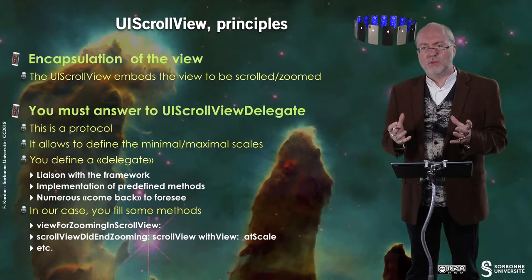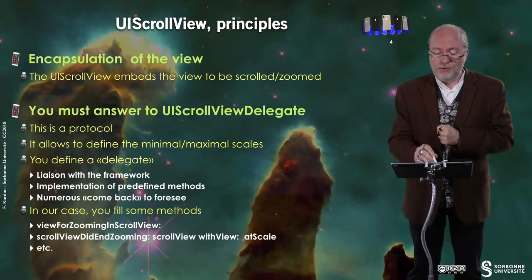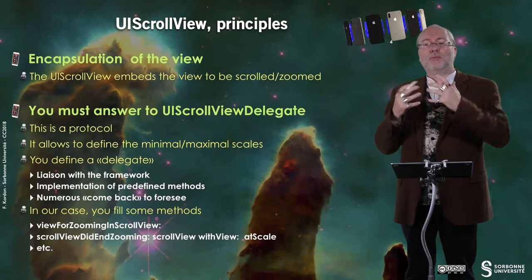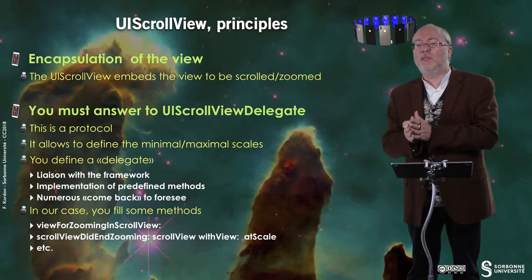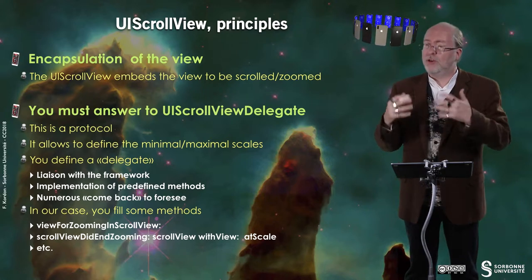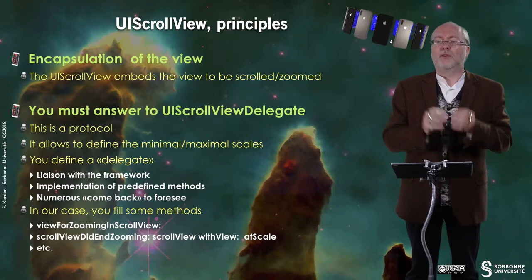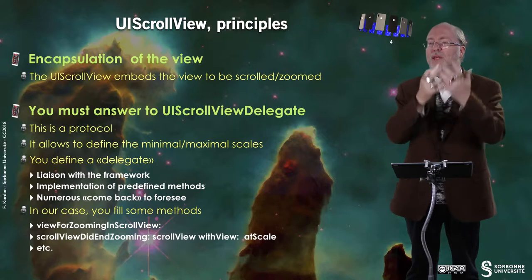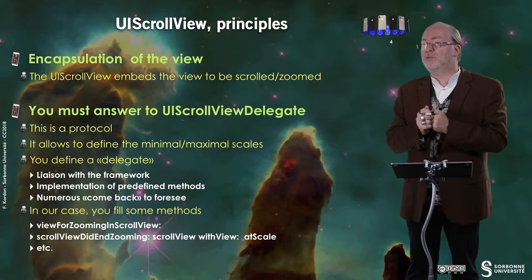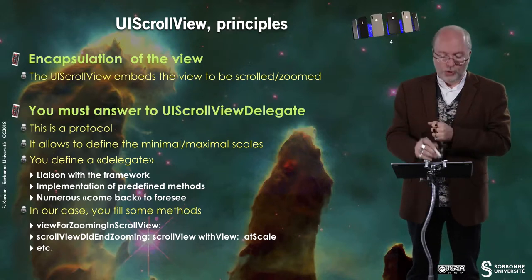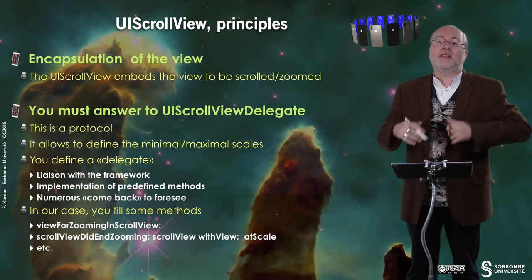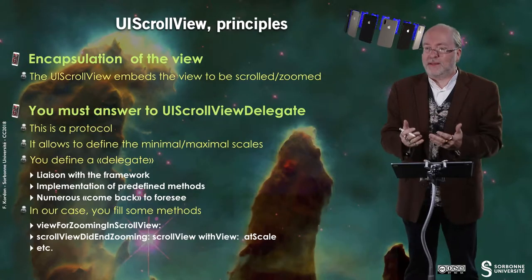So what's the principle of a UIScrollView? The UIScrollView encapsulates a view — this view is a sub-view of the UIScrollView and will be manipulated through it. To do so, you must conform to a UIScrollViewDelegate protocol. In the protocol you have methods to implement, which can be mandatory or optional depending on the protocol. You associate a delegate, which is the target that receives events related to that protocol and handles the corresponding callbacks if they are implemented.